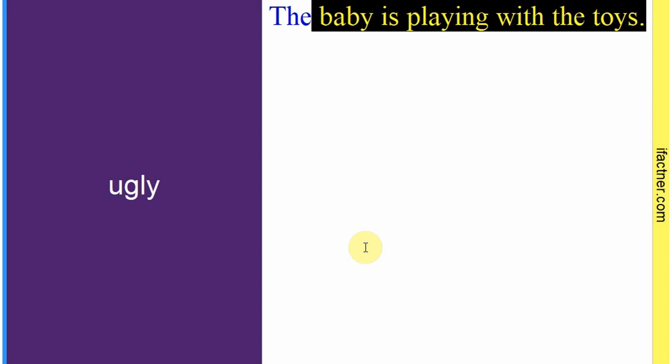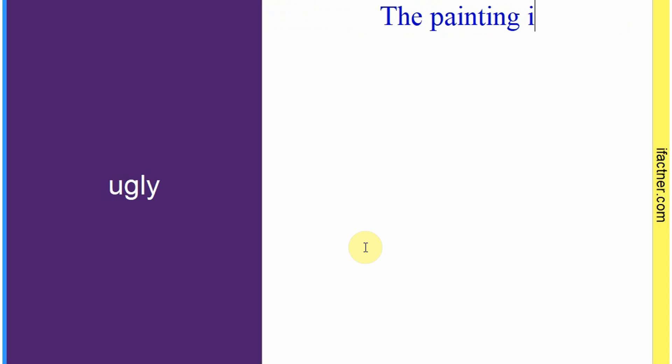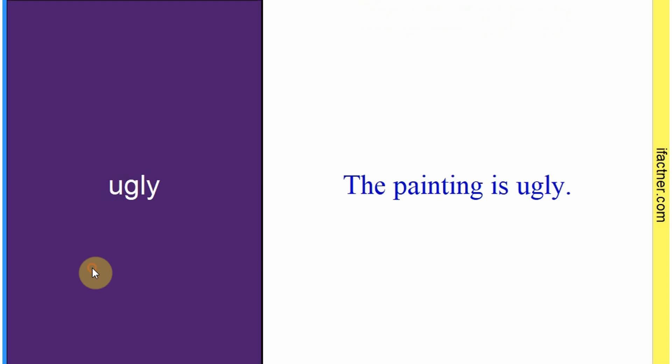Word hai: 'ugly'. Sentence banaate hain meaning samajhne ke liye: 'The painting is ugly.' Joh painting hai woh bahot badsoorat hai. Toh 'ugly' ka matlab hota hai 'badsoorat'. Sentence banaaya: 'The painting is ugly.'